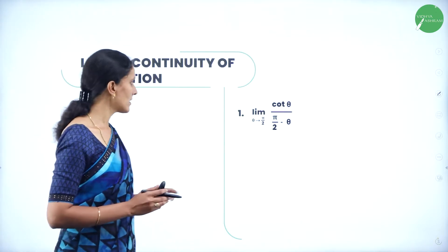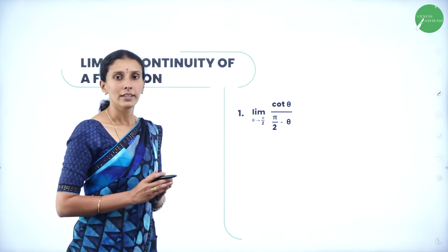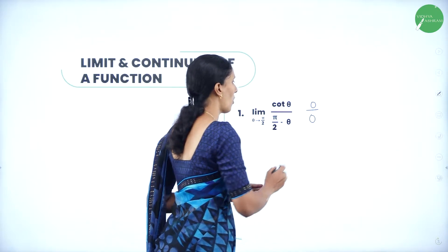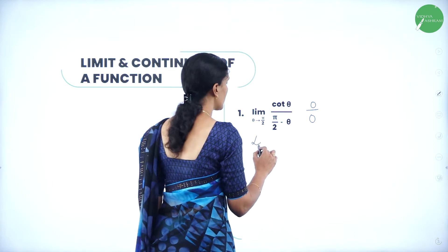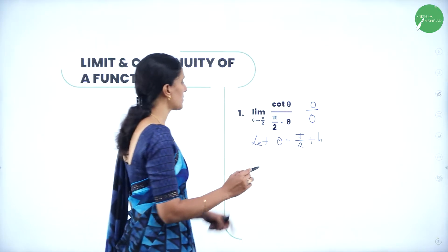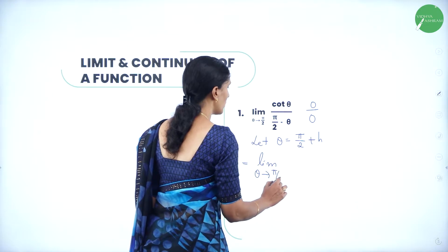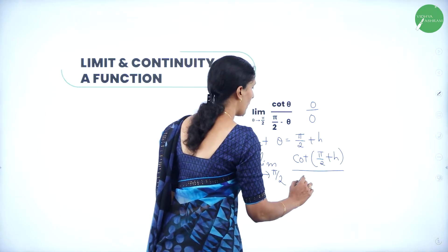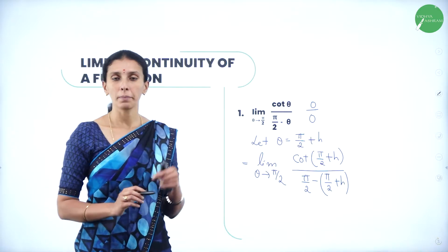The first problem is: limit of the function cot θ / (π/2 - θ) as θ tends to π/2. If you apply π/2 here, the function becomes 0/0 form. So what I'll do is let θ = π/2 + h, where h is some angle. Now substituting, the function becomes: limit of cot(π/2 + h) / (π/2 - (π/2 + h)).